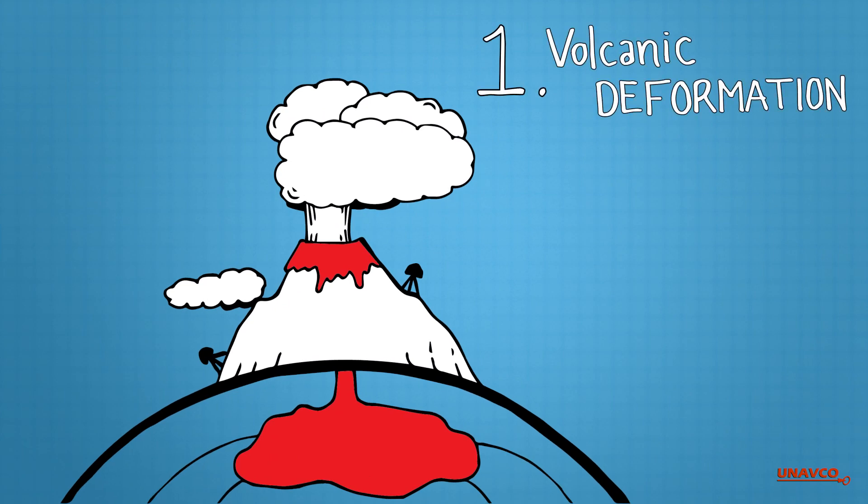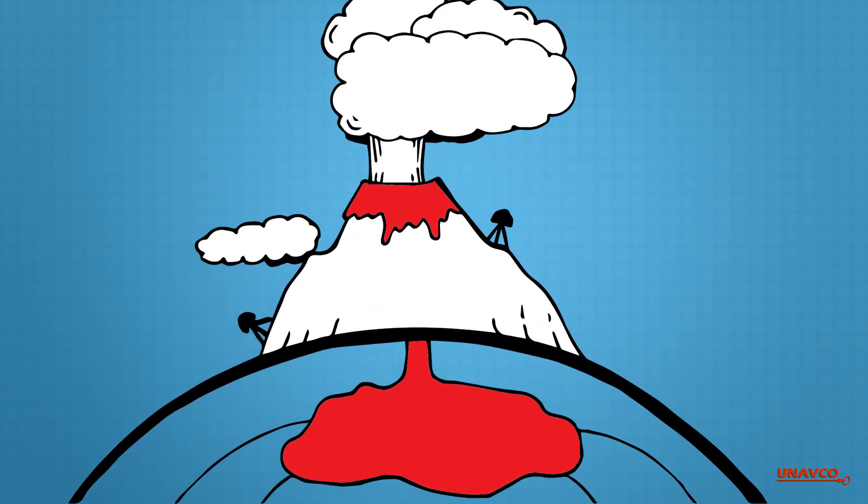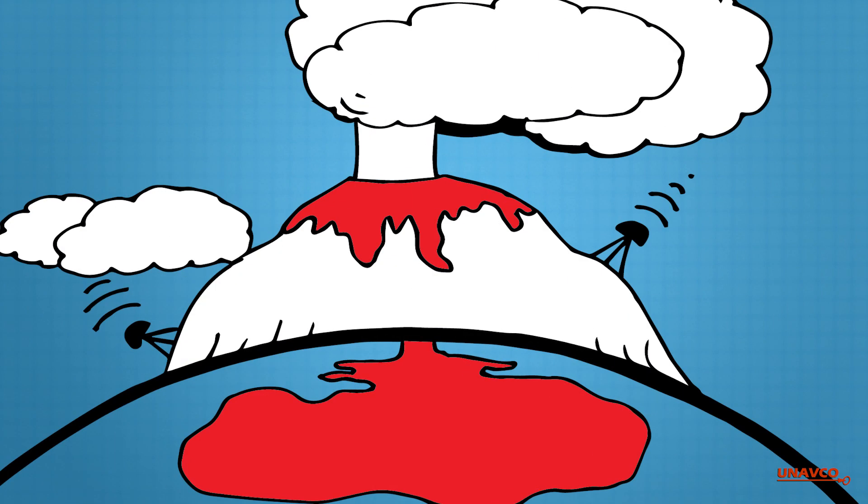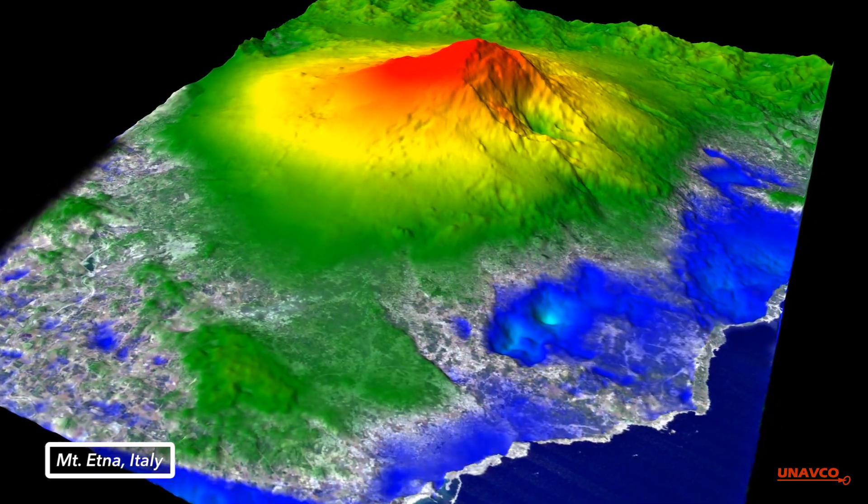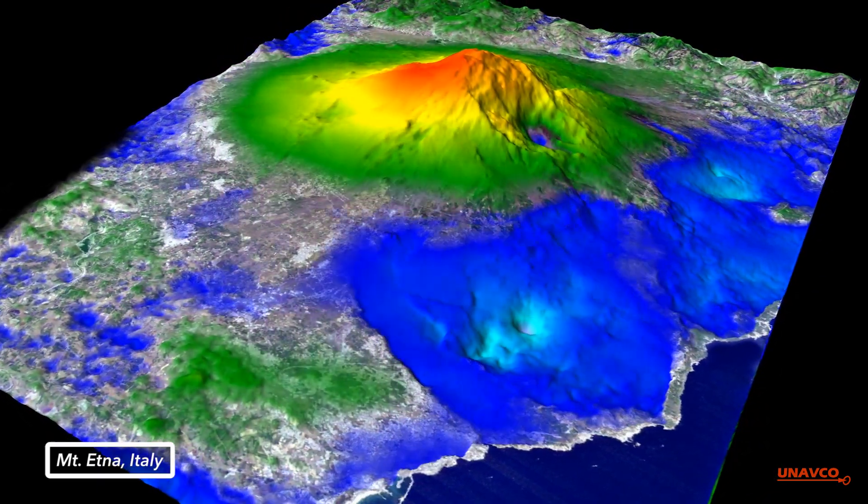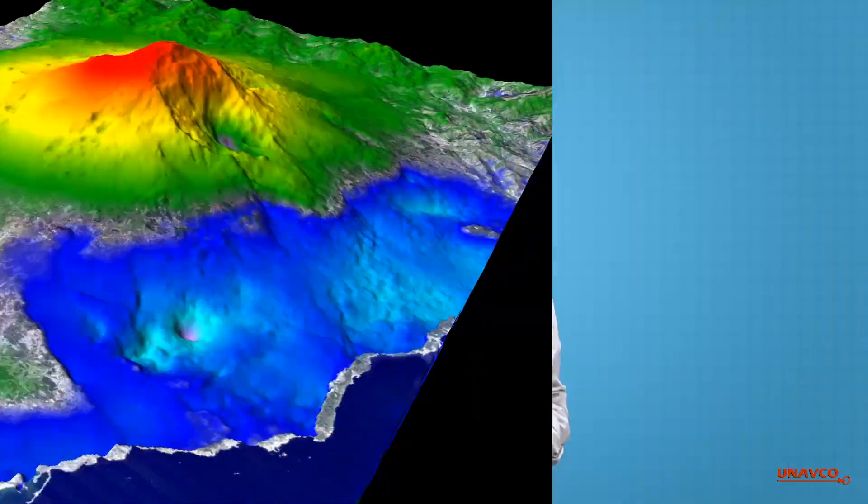The accumulation of magma in the shallow chamber below volcanoes causes the Earth's surface to actually inflate, deflate, and deform with changes in volume. By monitoring ground deformation in active volcanic zones, we can begin to understand the complex plumbing that lies below volcanic features, and hopefully forecast volcanic eruptions.